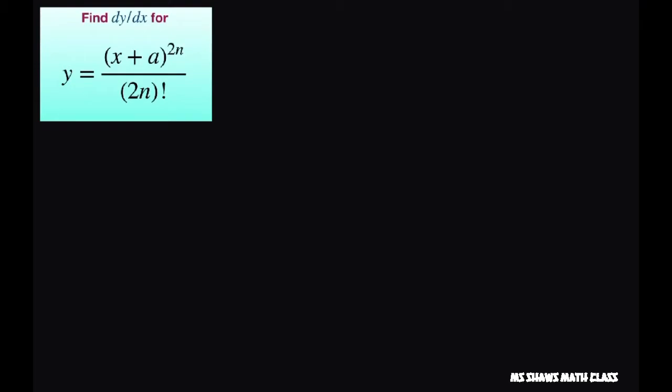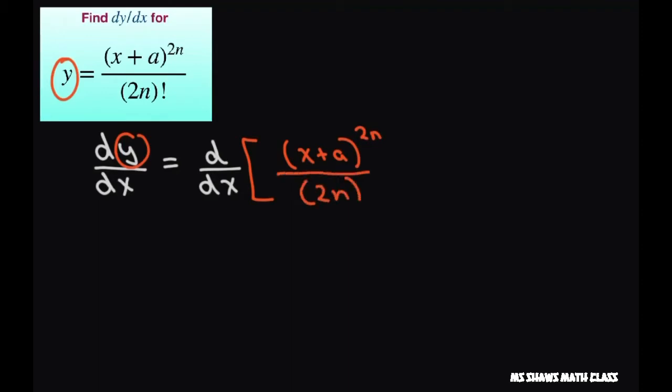So basically what they're asking for is the derivative of y with respect to x. Now our y is here. So substituting in our y, that's going to be x plus a to the power of 2n divided by 2n factorial.